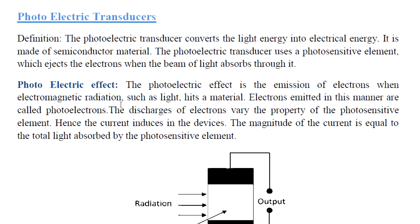The photoelectric effect is the emission of electrons when electromagnetic radiation such as light hits a material. The photoelectric effect involves light, electromagnetic radiation, photosensitive elements, and electron emission. Albert Einstein explained this effect and received the Nobel Prize for it. This is based on quantum theory — Einstein's concept of packets in quantum physics.